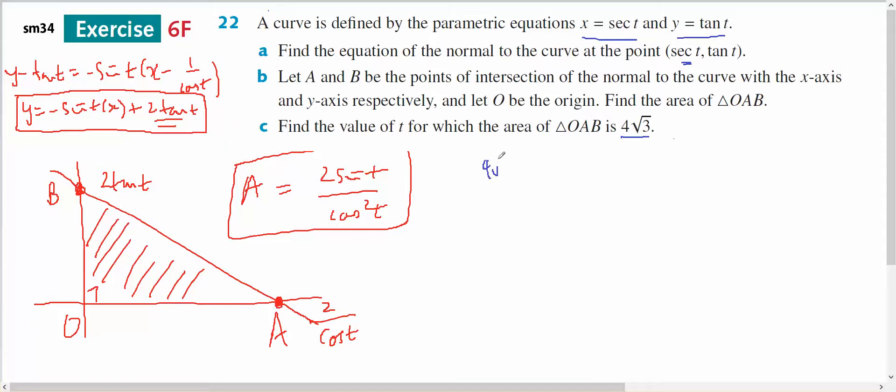So 4 root 3 equals 2 sine of T over cos squared of T. So 2 root 3 equals sine of T over cos squared of T. So 2 root 3 cos squared of T equals sine of T.